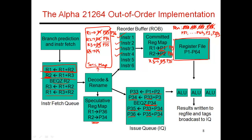Then instruction five comes along and commits. At this point, I say that if I ever care about the value in R1, it is the value in P36, not the value in P33. So now P33 gets put back in the free pool again.